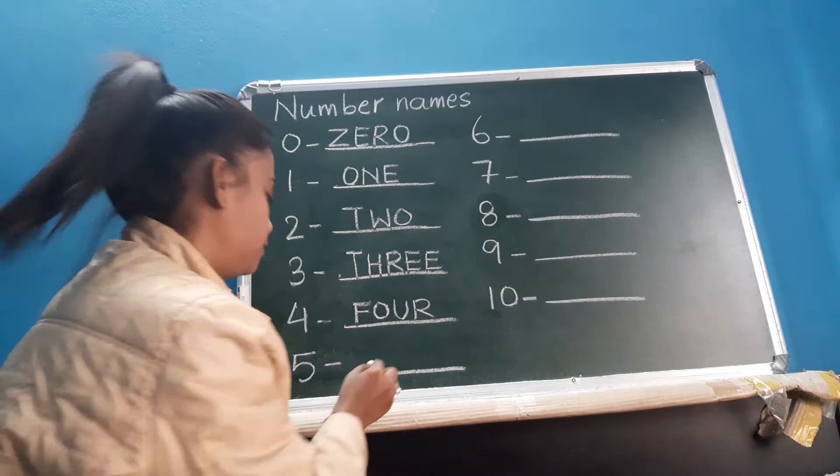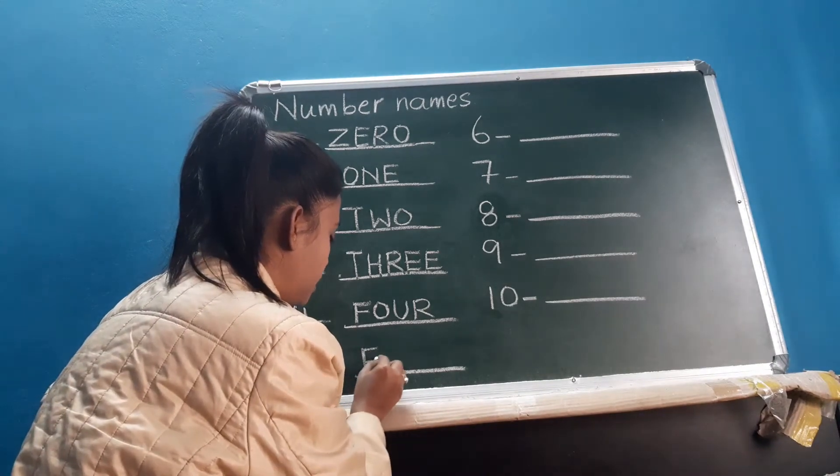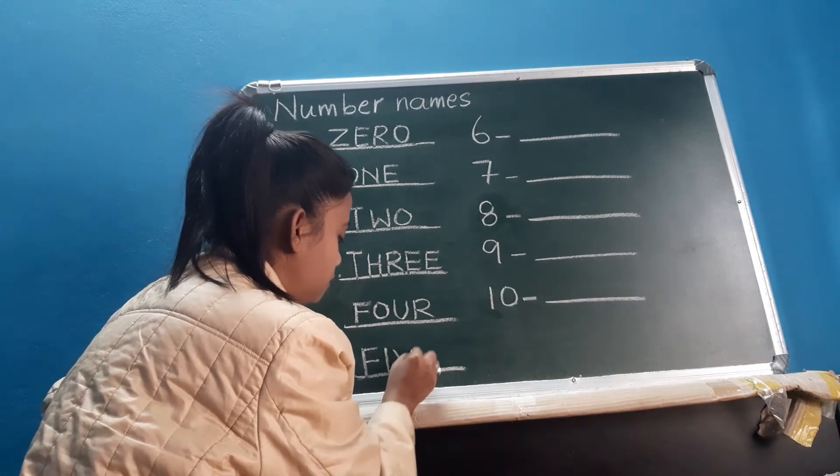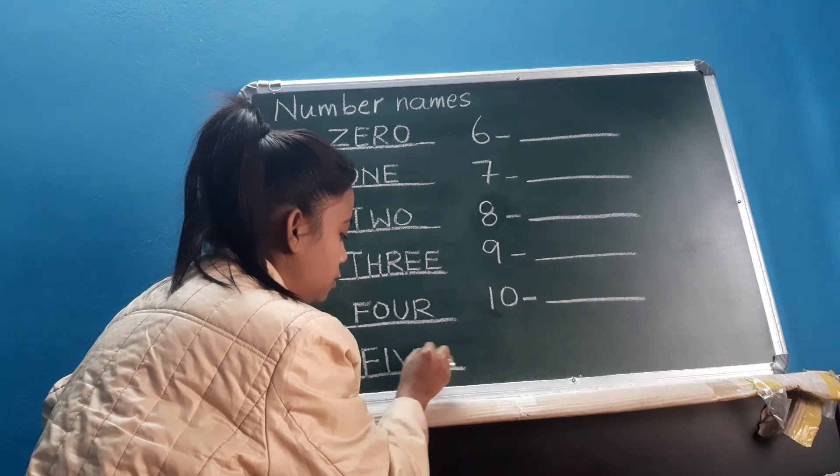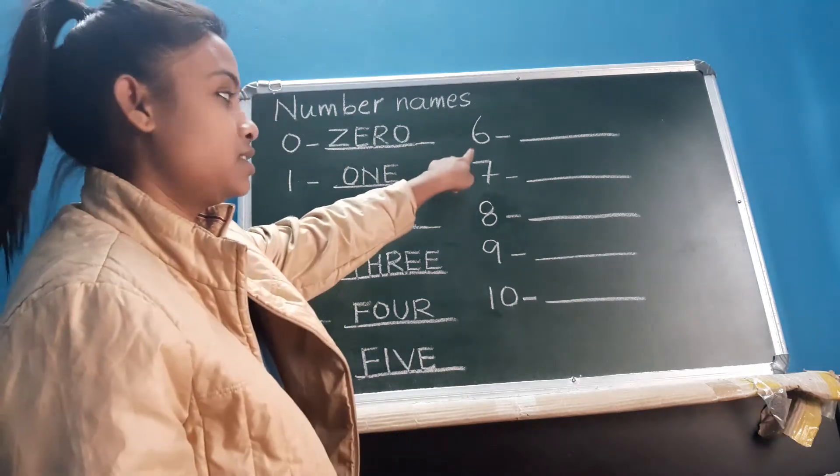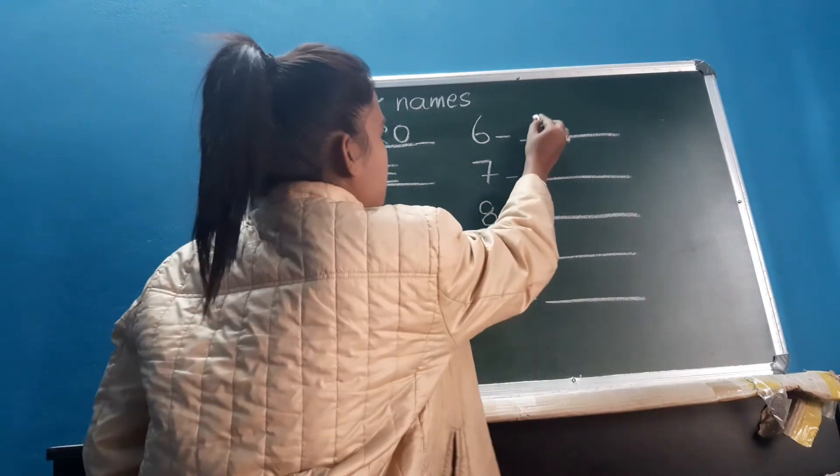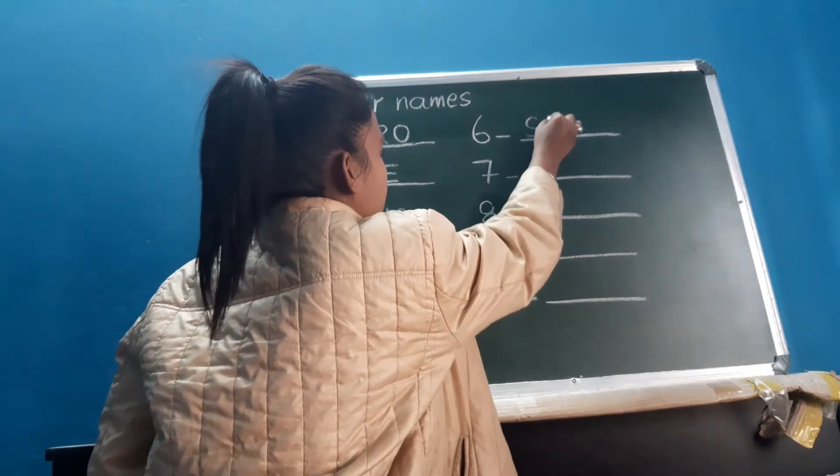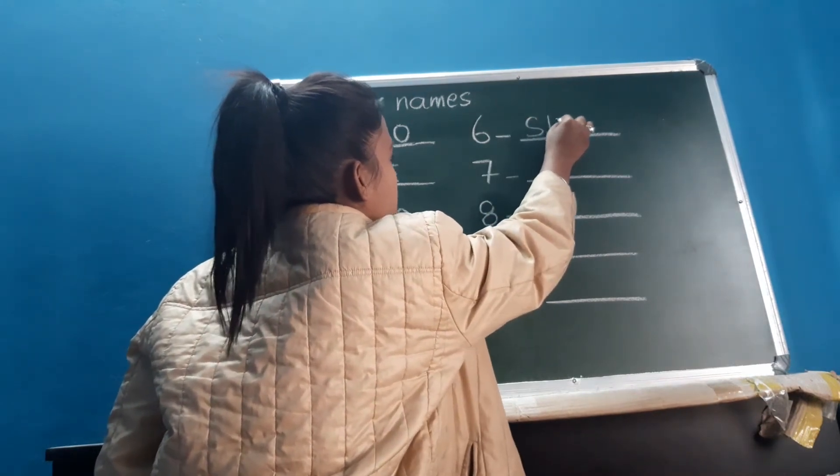Next is 5: F, I, V, E. Five. Next is 6: S, I, X. Six.